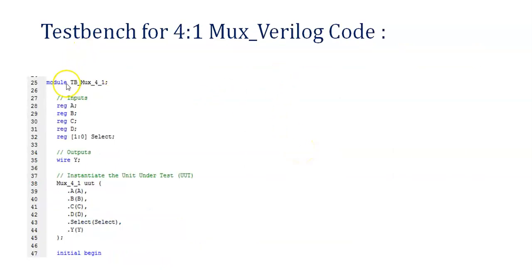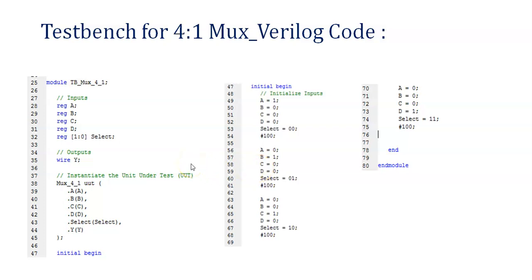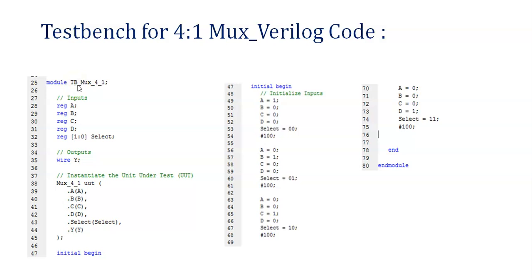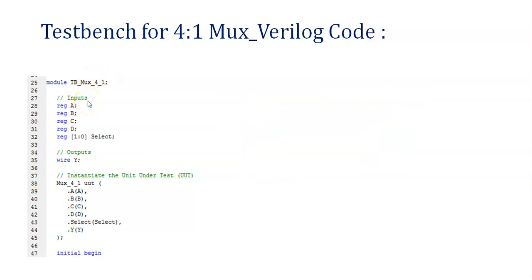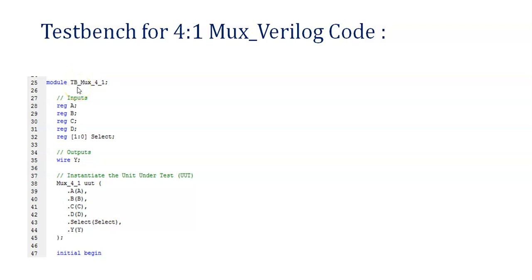In the test bench you need to start with module and end with endmodule. When using the ISE tool, a partial test bench is provided and you just need to add the inputs. But when using Vivado you need to write it from scratch — from module to endmodule everything. You should name the test bench; here it is TB_MUX_4to1. Using the TB prefix makes it clear this is a test bench written for a specific unit under test (UUT). It is not mandatory but it makes things easier to understand.